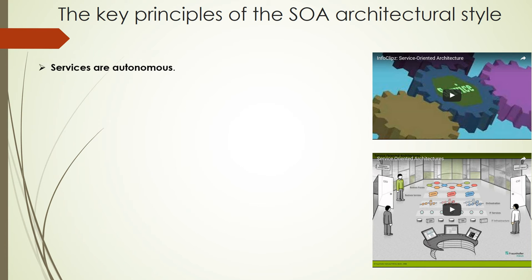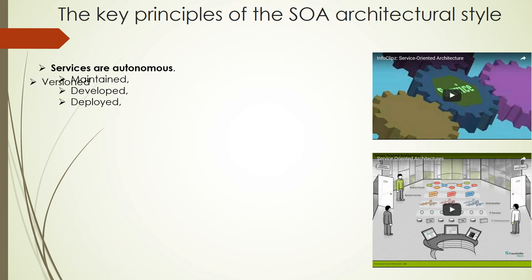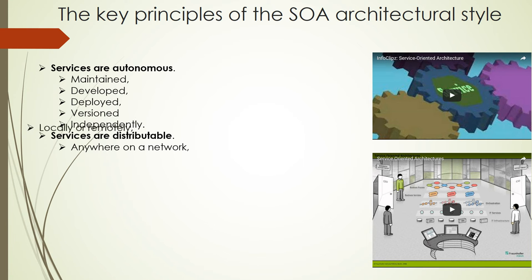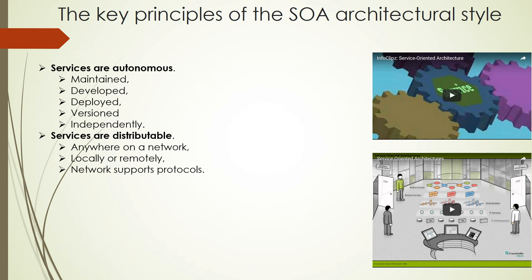The first principle is that services are autonomous — each service is maintained, developed, deployed, and versioned independently. Services are also distributable — they can be located anywhere on a network, locally or remotely, as long as the network supports the required communication protocols.